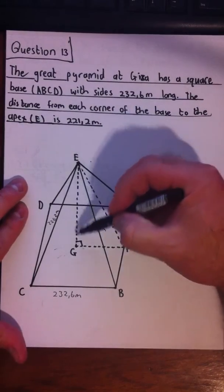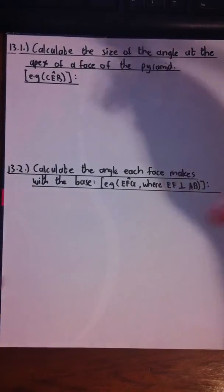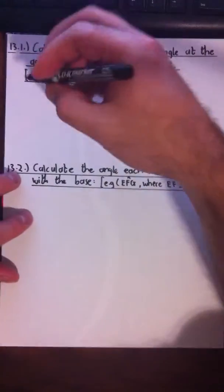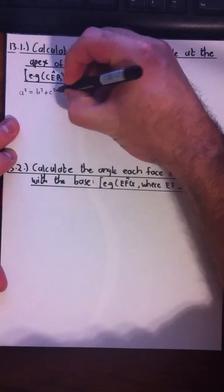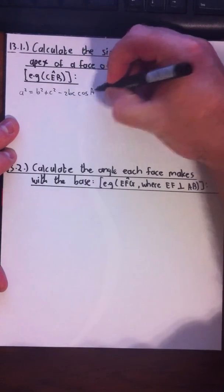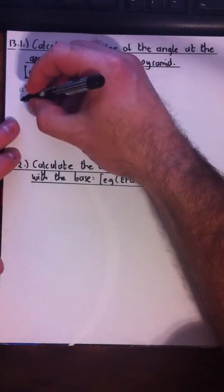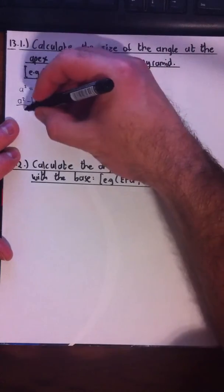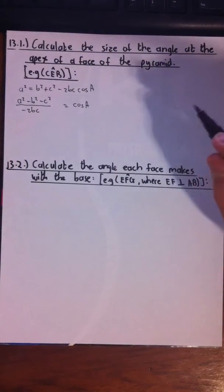Alternatively, we could construct a vertical line down and use two right-angled triangles, but let's just use the cosine rule — that's more straightforward, at least it's only one operation. The cosine rule states: A squared equals B squared plus C squared minus 2BC cosine of angle A. Now we want the angle, so let's rearrange: A squared minus B squared minus C squared, divided by negative 2BC, equals cosine of A.